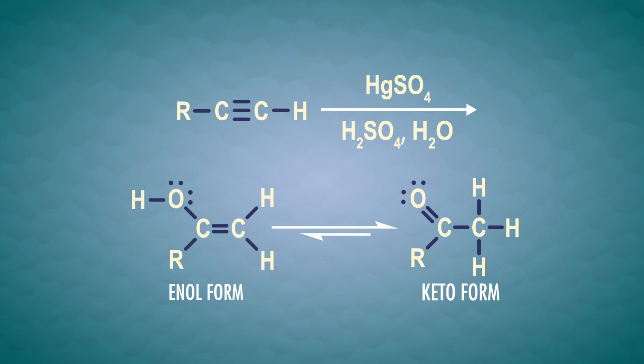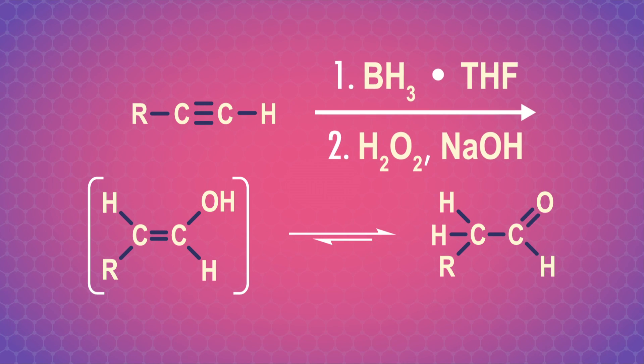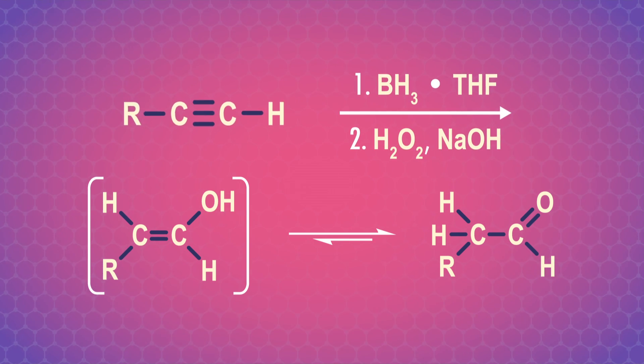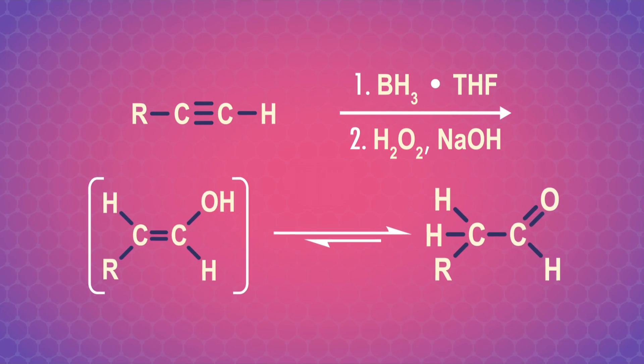The enol tautomerizes to a ketone. It's the same story if we carry out hydroboration oxidation of an alkyne, except this time our enol tautomerizes to an aldehyde. If you want to know more about these alkyne chemical reactions, check out episode 18, because this episode is all about enols and their cousins, enolates.